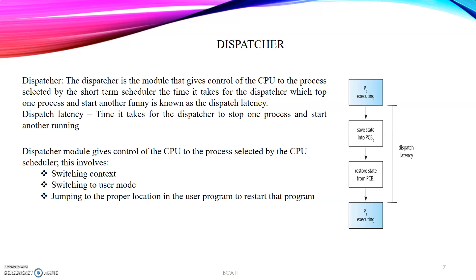Now, what is the dispatcher? The dispatcher is the module that gives control of the CPU to the process selected by the short-term scheduler. The CPU scheduler selects one process and indicates that it is the one that is going to get the CPU to begin execution. The dispatcher is the module that actually gives control of the CPU to that particular process selected by the CPU scheduler.